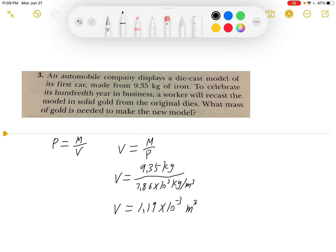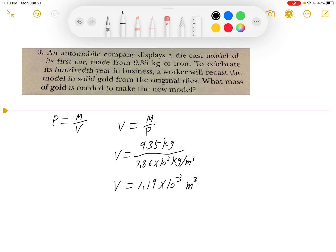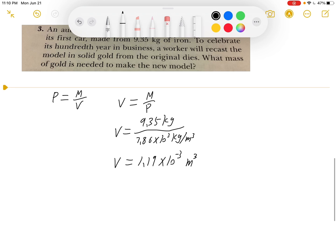And after we have the volume of the model, we can apply this formula again to find what the mass would be if we used gold to make the new model. So the mass is density times the volume.